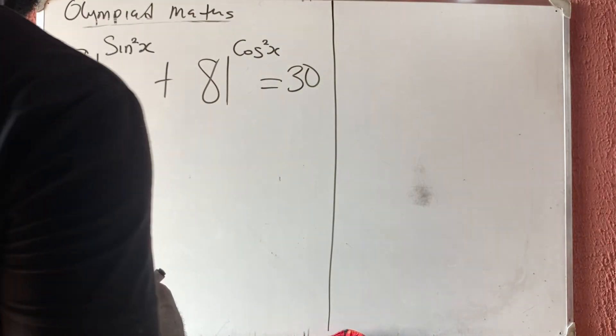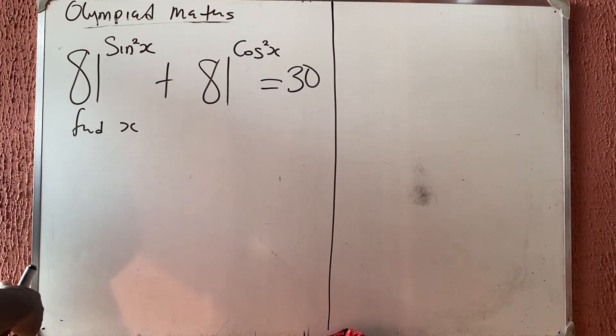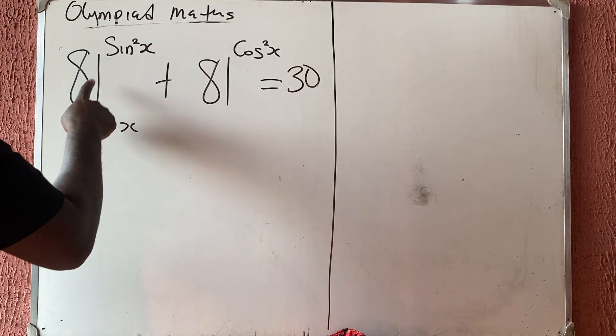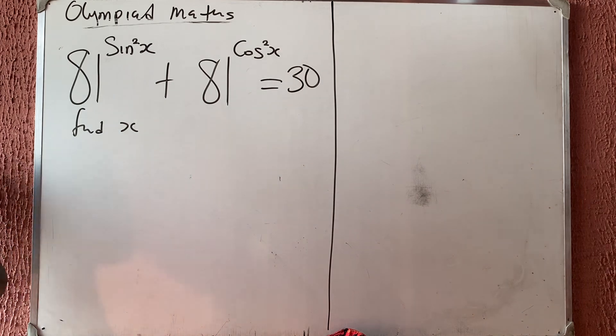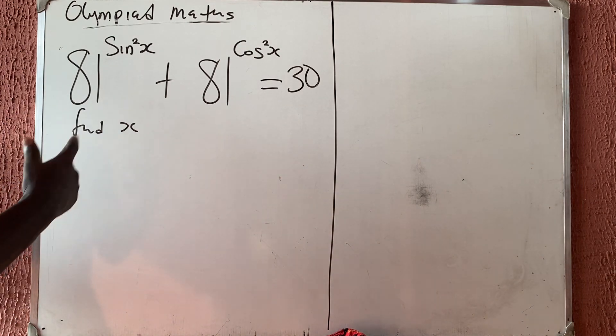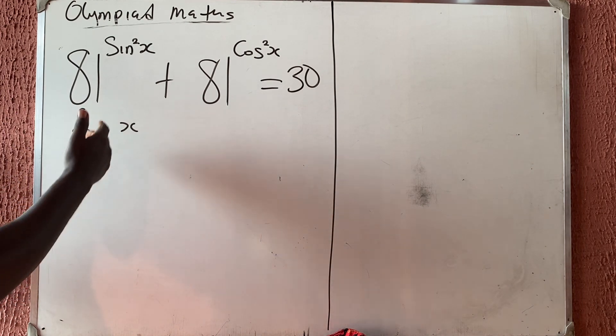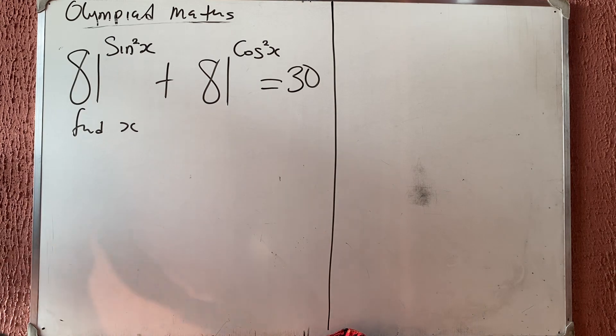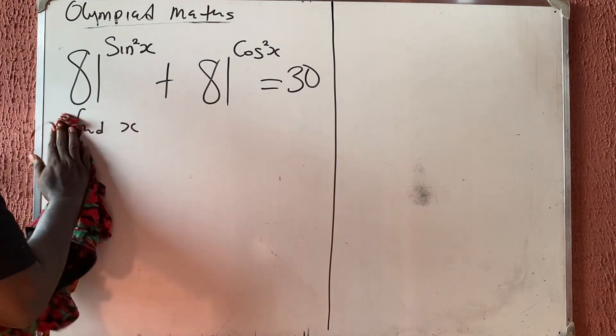Let us quickly solve this olympiad problem. It is very simple: 81 raised to the power sine squared x plus 81 raised to the power cosine squared x equals 30. We need to find x.